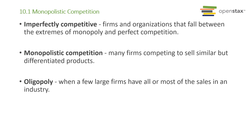In monopolistic competition we have many companies — just like perfect competition — but they sell similar and differentiated goods. In perfect competition everybody sells the same good. In oligopoly, you have a few companies: 2, 3, 4, 5, or 6, all in the same industry. What makes oligopoly special is that the market is small enough that the action of one company can have an impact on the others — that's called an oligopoly.